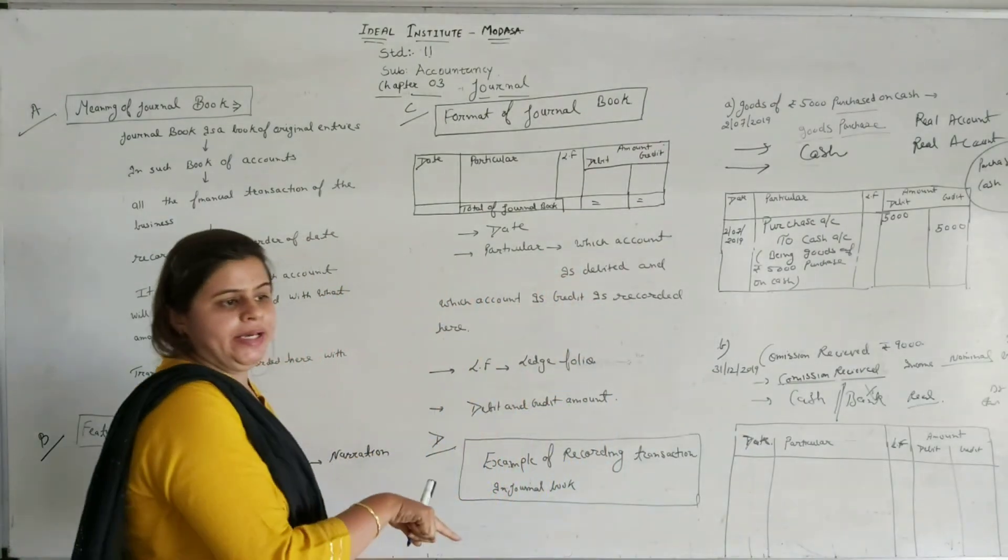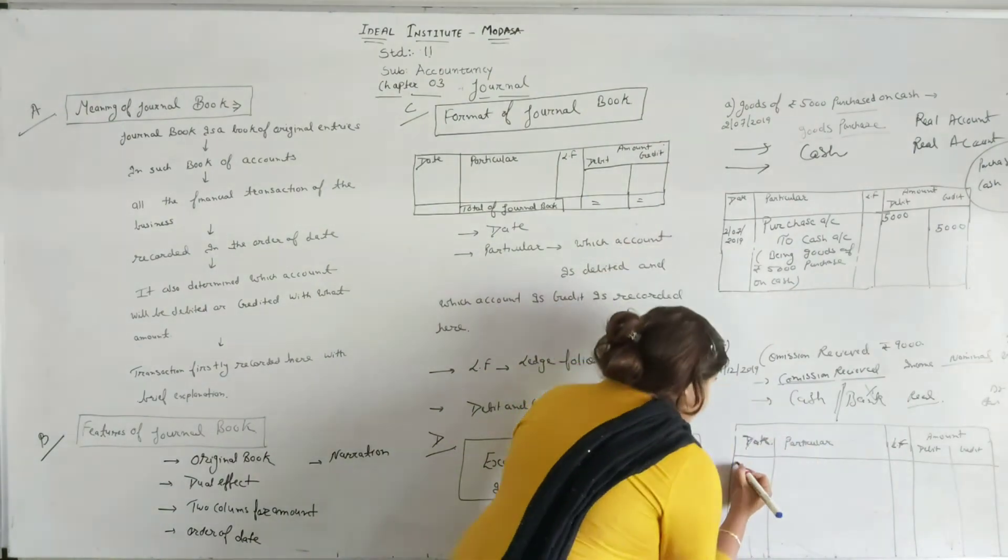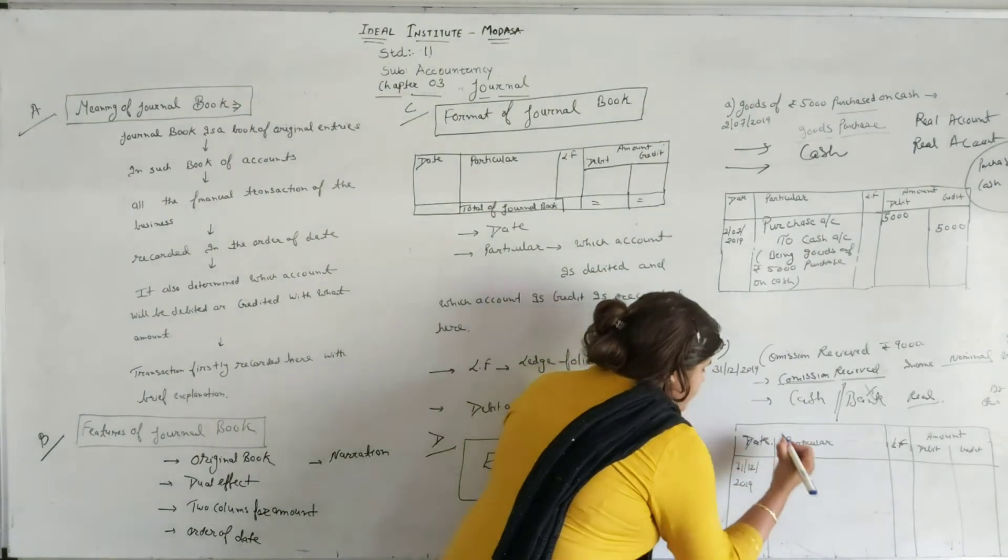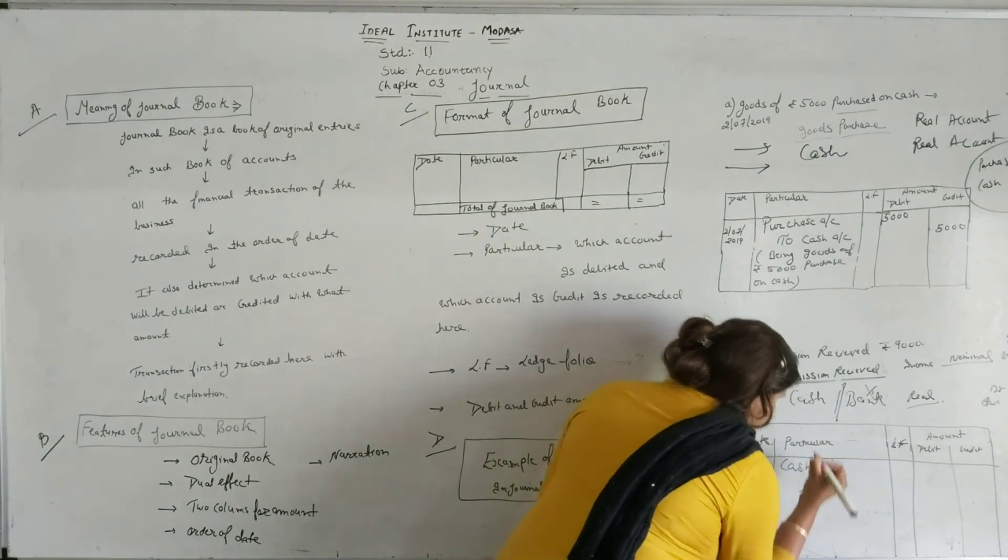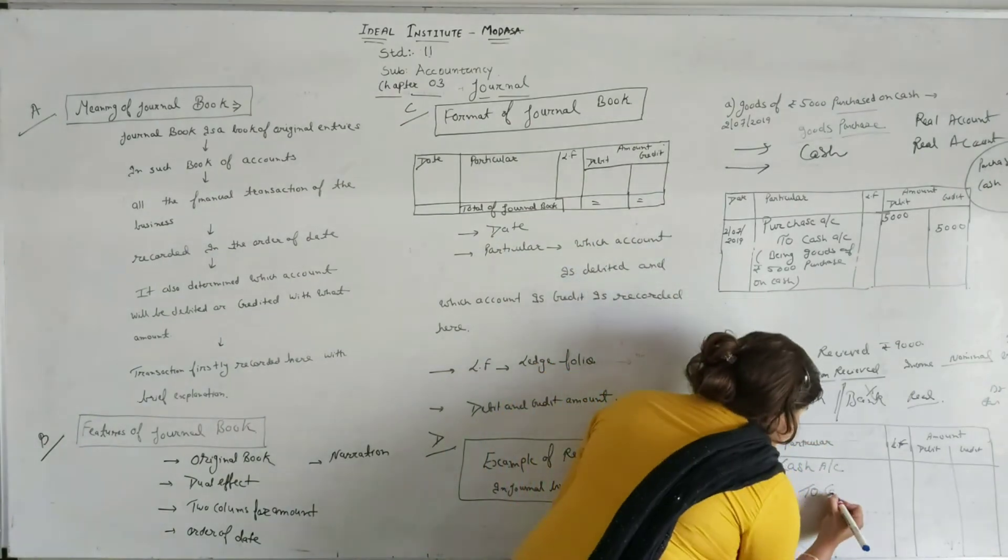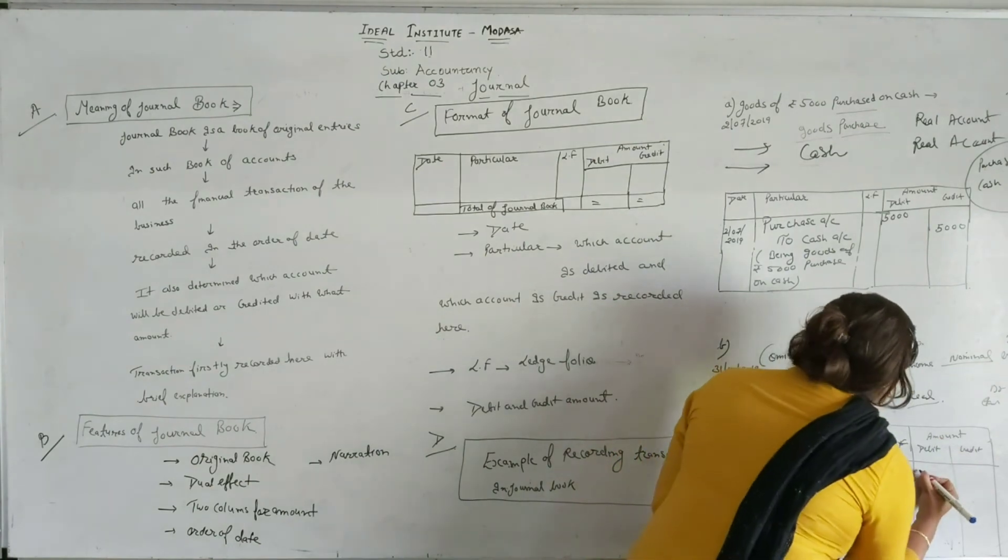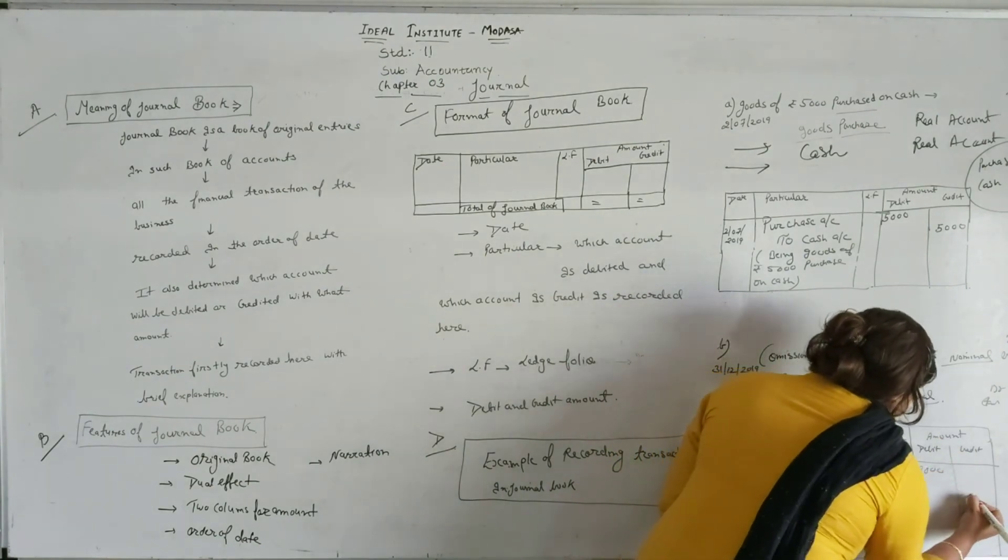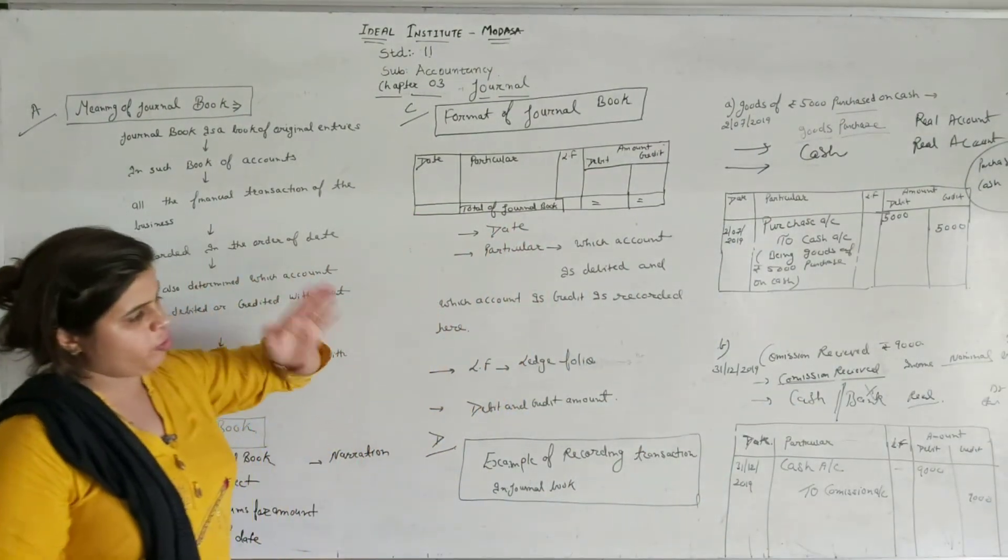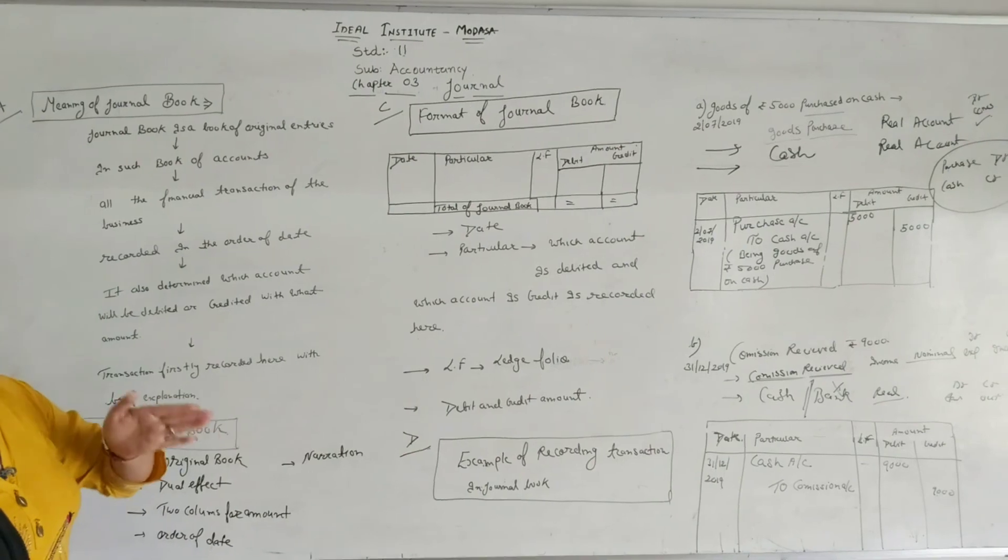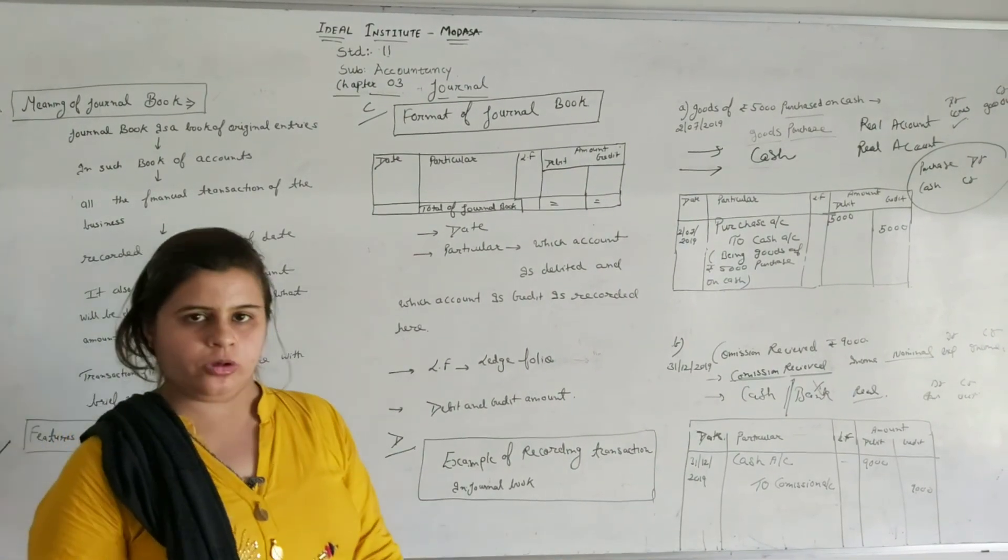Then put it in a systematic form. Date mention. Cash is coming, means cash account debit. For credit, you have identified, move two words ahead, then write down commission account credit, and write the amount here: nine thousand, nine thousand. Leave the blank LF. Now please try to make efforts from your side for practicing regarding how to record the transactions in journal book. Got it? Thank you.